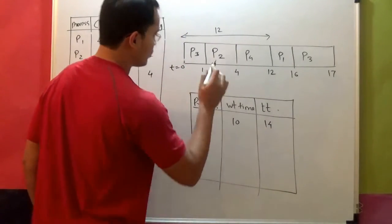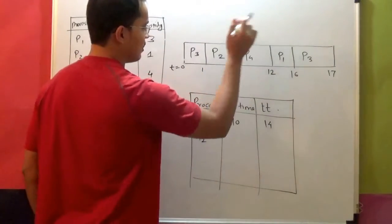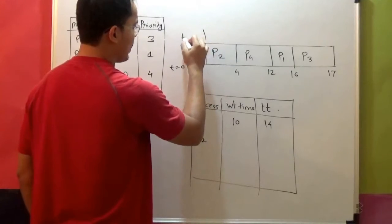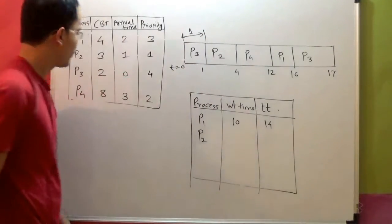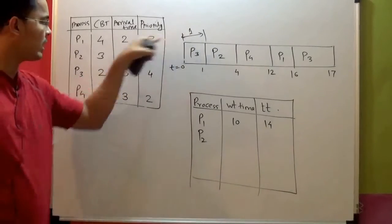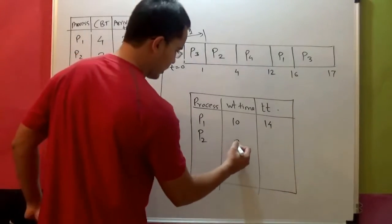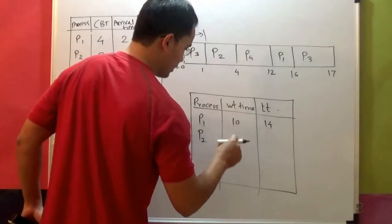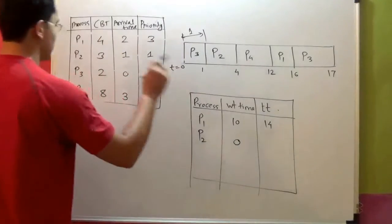What about P2? P2's waiting time - waiting time seems like 1. But it arrived at what time? At t equal to 1. So 1 minus 1, that is 0. Waiting time is 0, and turnaround time is 0 plus burst time is 3.